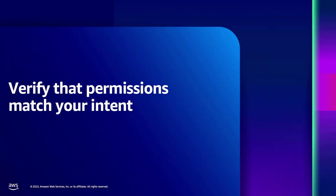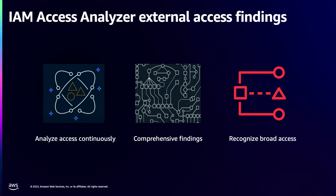As you're authoring policies, the next stage is to ensure that whatever permissions are being granted matches your intent. For this, Access Analyzer offers external access findings. This feature helps you identify what principals external to your account or organization can access resources within your account, and provides this information in the form of findings to help you identify unintended access paths from outside your zone of trust. You can set up Access Analyzer just for selected accounts, or log into your delegated admin account to set this up for the whole organization.